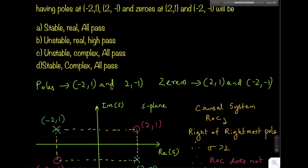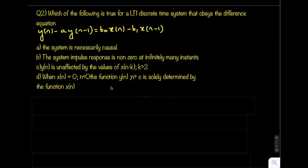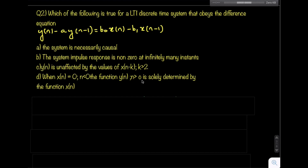Now let us solve question 2 from the GATE paper. The question asks which of the following is true for an LTI discrete-time system obeying a given difference equation. Options are: the system is necessarily causal; the impulse response is non-zero at infinitely many instances; y(n) is unaffected by x(n-k) for k greater than 1; or x(n) equals 0 for n less than 0, and y(n) for n greater than 0 is solely determined by x(n).